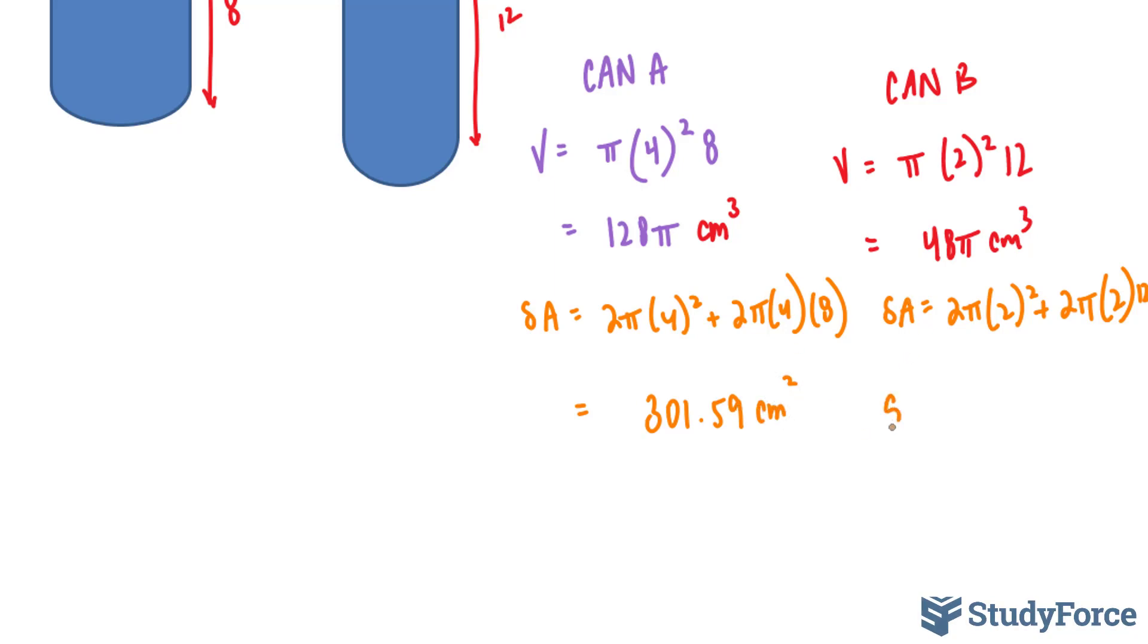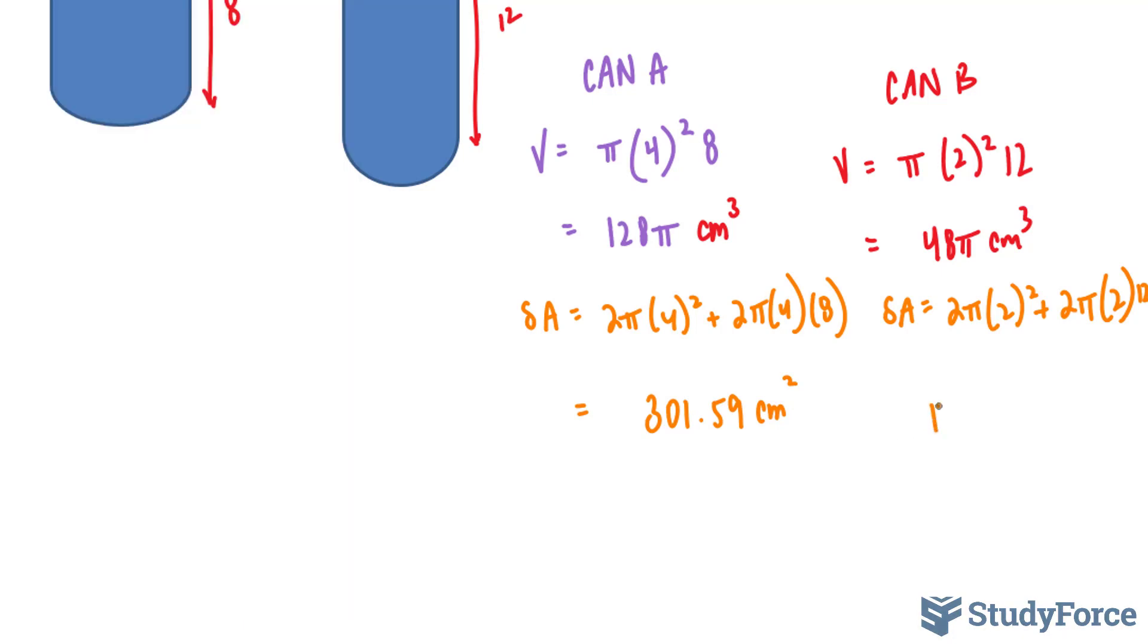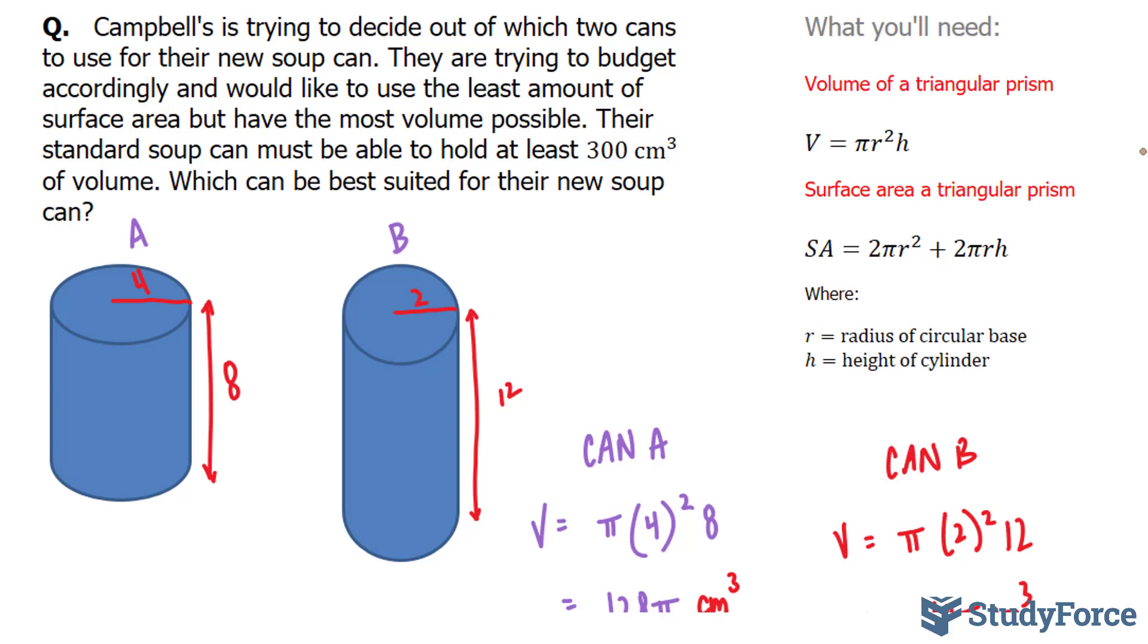And for this one, the surface area will be, and this gives us 56 pi, 175 centimeters squared, approximately. So if Campbell's had to select a can based on their standards, where they say they need at least 300 centimeters cubed, they will have to choose can A.